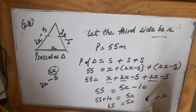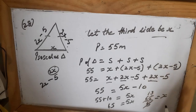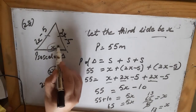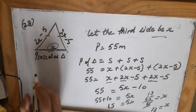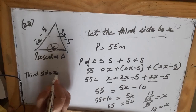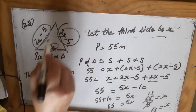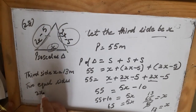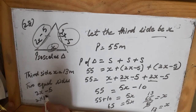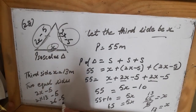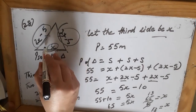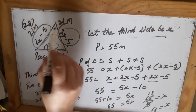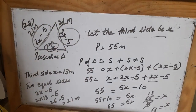So 5x minus 10 equals 55. Bringing minus 10 to the other side: 5x equals 65, so x equals 13. The third side is 13 meters. The two equal sides are 2 multiplied by 13 minus 5 equals 26 minus 5 equals 21 meters each. So the sides are 13, 21, and 21 meters. Verification: 21 plus 21 plus 13 equals 55, which is the perimeter.